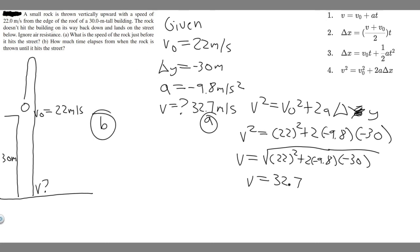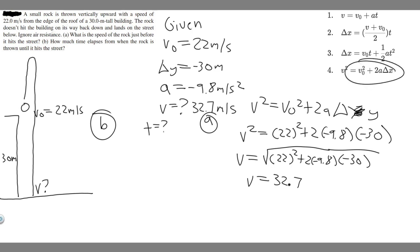Now let's move on to Part B: how much time elapses from when the rock is thrown until it hits the street? We're trying to find t, so t equals question mark. We can use any of the kinematic equations that contain t — I'm going to choose v equals v₀ plus a times t because it's the easiest, since we just found v.